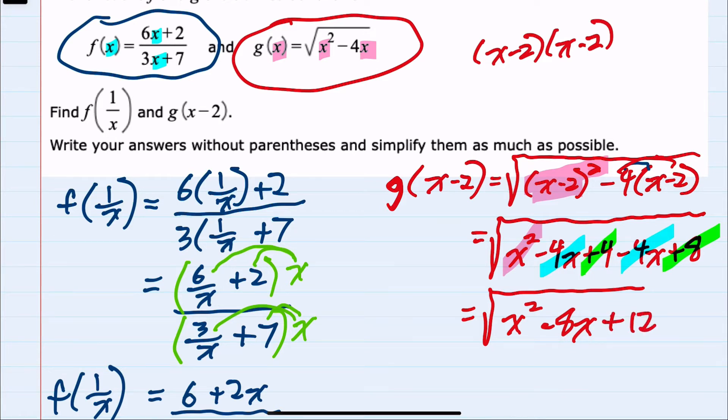And at this point, we've simplified as much as possible. g of x minus 2 is the square root of x squared minus 8x plus 12.